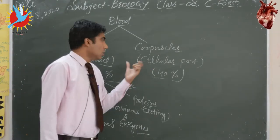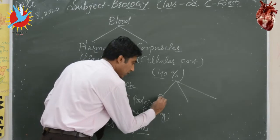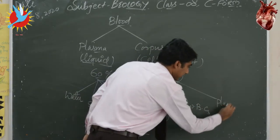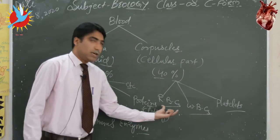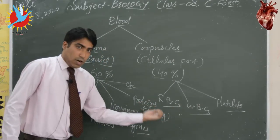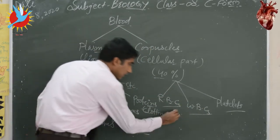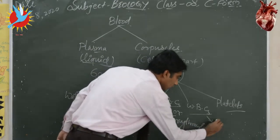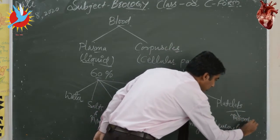Blood corpuscles can be categorized into three types: RBCs, WBCs, and platelets. The full form of RBCs is red blood corpuscles, WBCs is white blood corpuscles. They also have other names: RBCs are known as erythrocytes, WBCs are known as leukocytes, and platelets are known as thrombocytes.